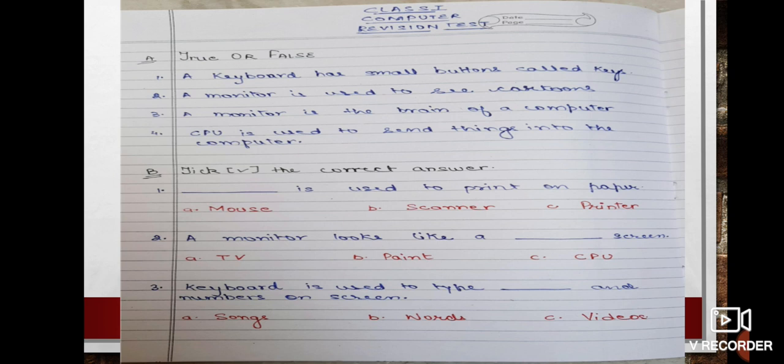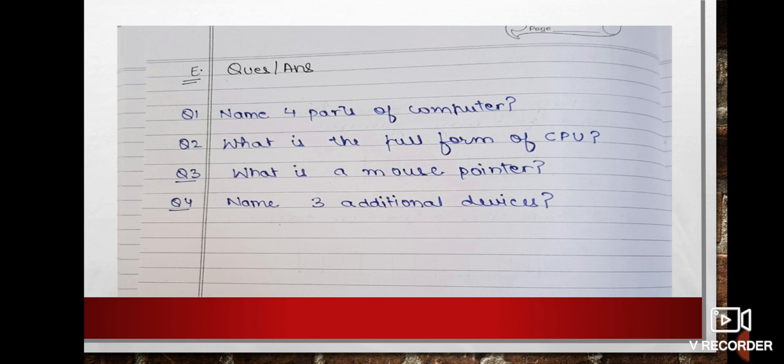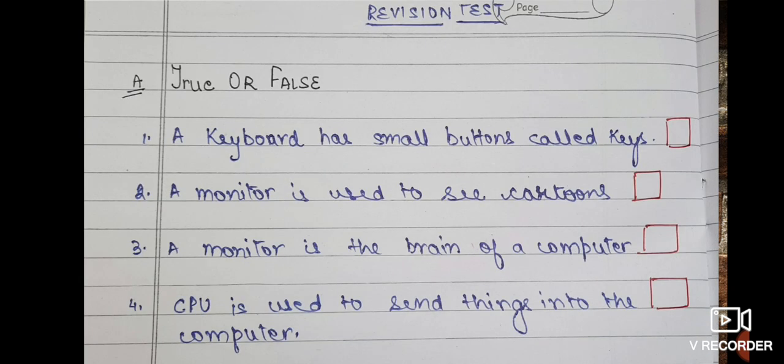So let's start with our test. This test is divided into parts A to E. Part A is true or false, B is tick the correct answer, C is who am I, D is write the missing part, and E is question answers.